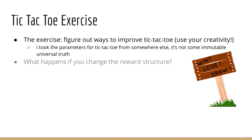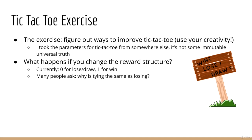First, what would happen if you were to change the reward structure? Currently we're using 0 for lose or draw, and 1 for win. A lot of people ask why tying is the same as losing. So you might want to test that out — perhaps a draw should be 0.5, or you might want to keep draw at 0 but make losing a minus 1.